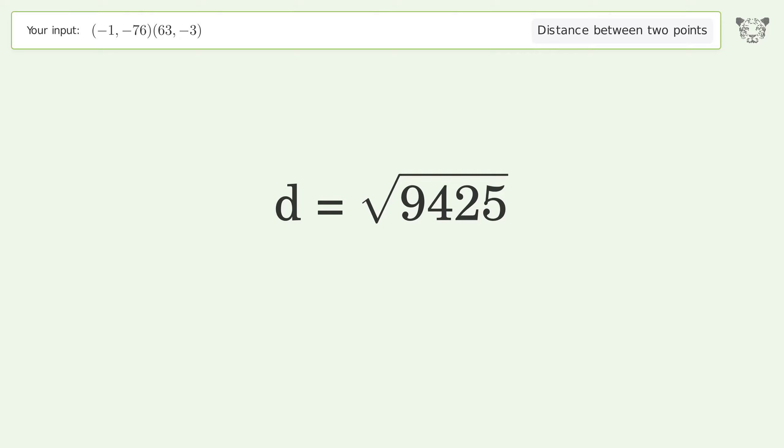And so the distance between the two points is the square root of 9425, or 97.082.